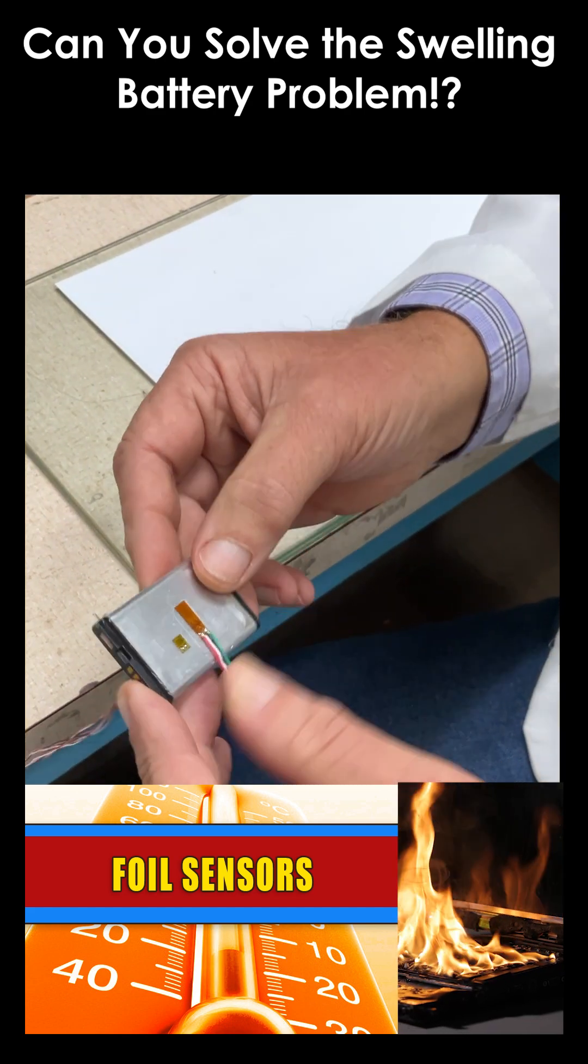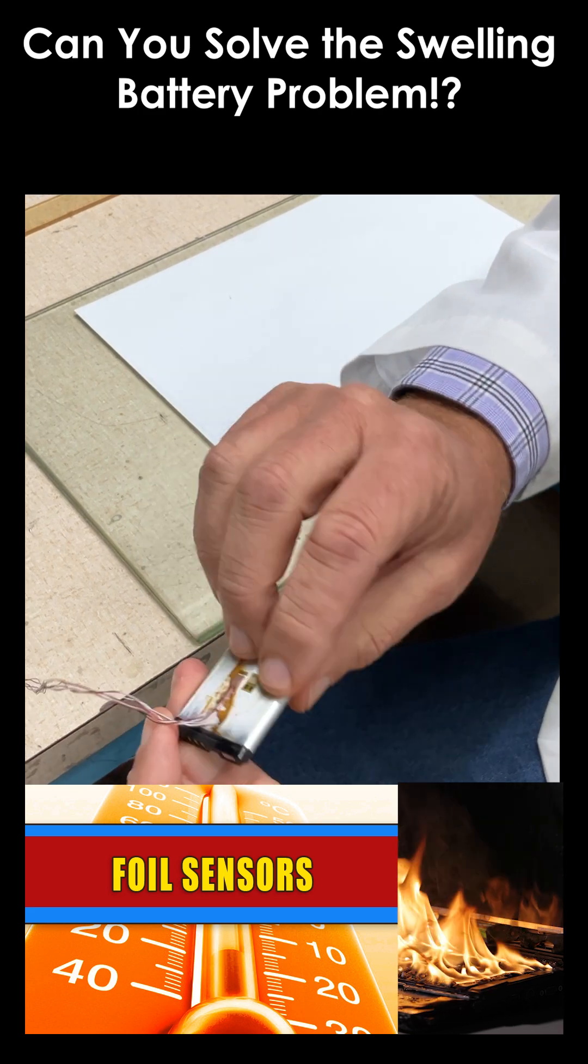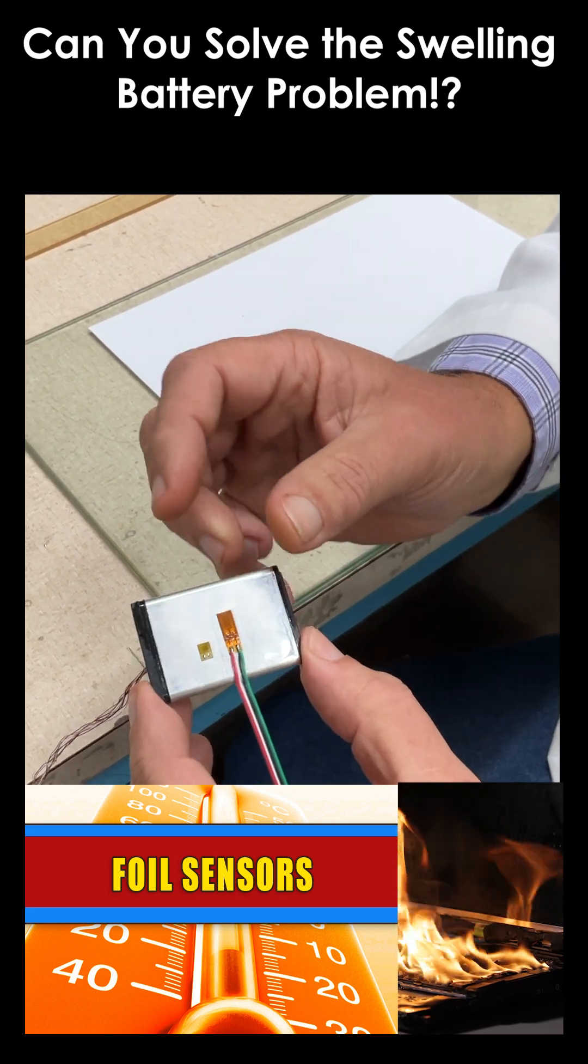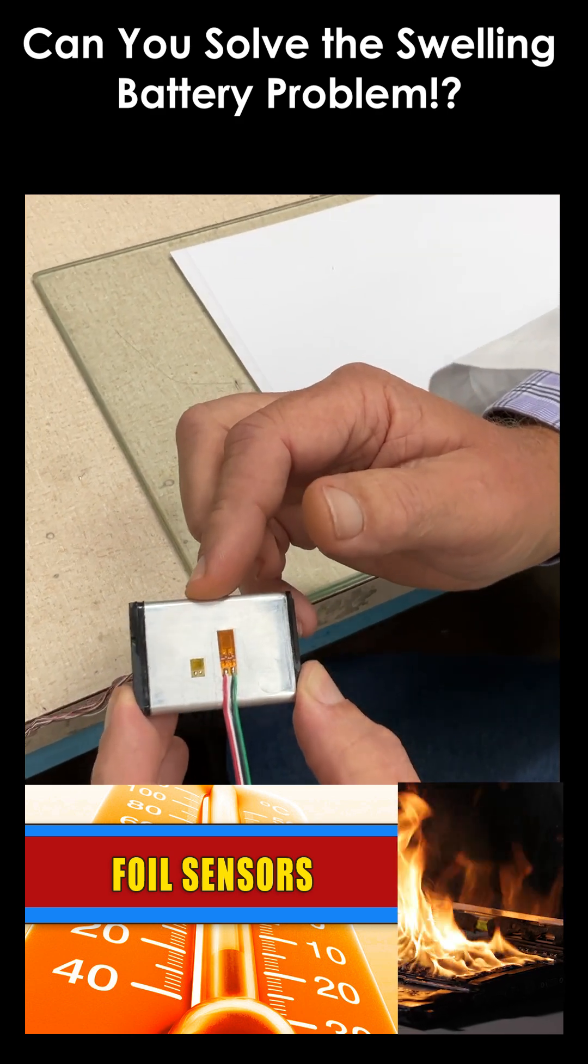The strain gauge, this battery actually lends itself well to the use of a strain gauge because it has this aluminum part of the packaging, which means that the strain gauge can be bonded to a material, the aluminum, where it can be self-temperature compensated.